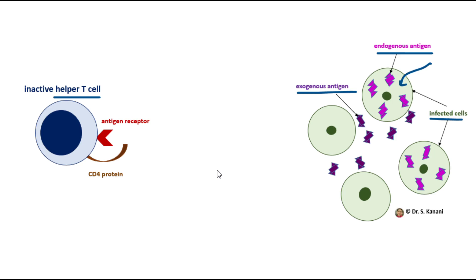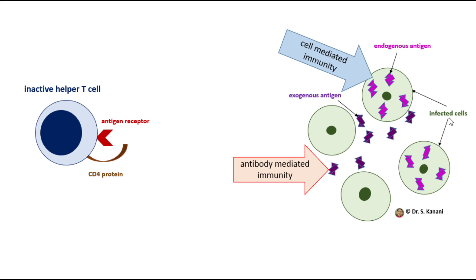We use different immune responses to destroy microorganisms. For example, infected cells must be killed and destroyed, so we need immune cells capable of targeting and killing them. However, to destroy microorganisms that are in extracellular fluid, we can also use chemicals.